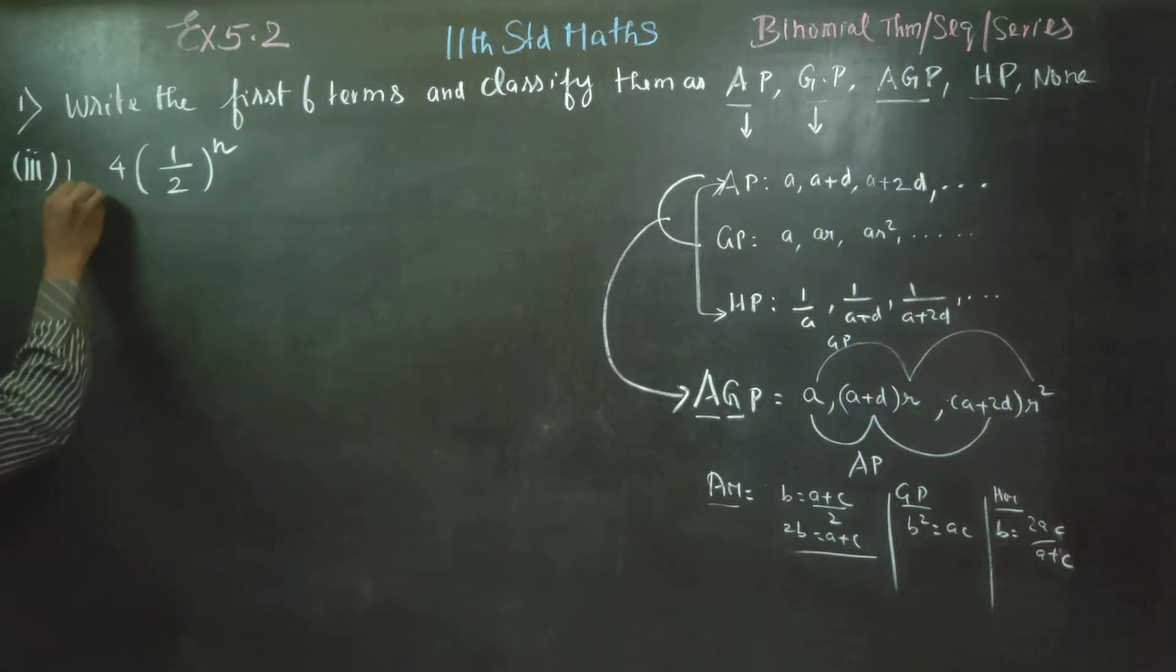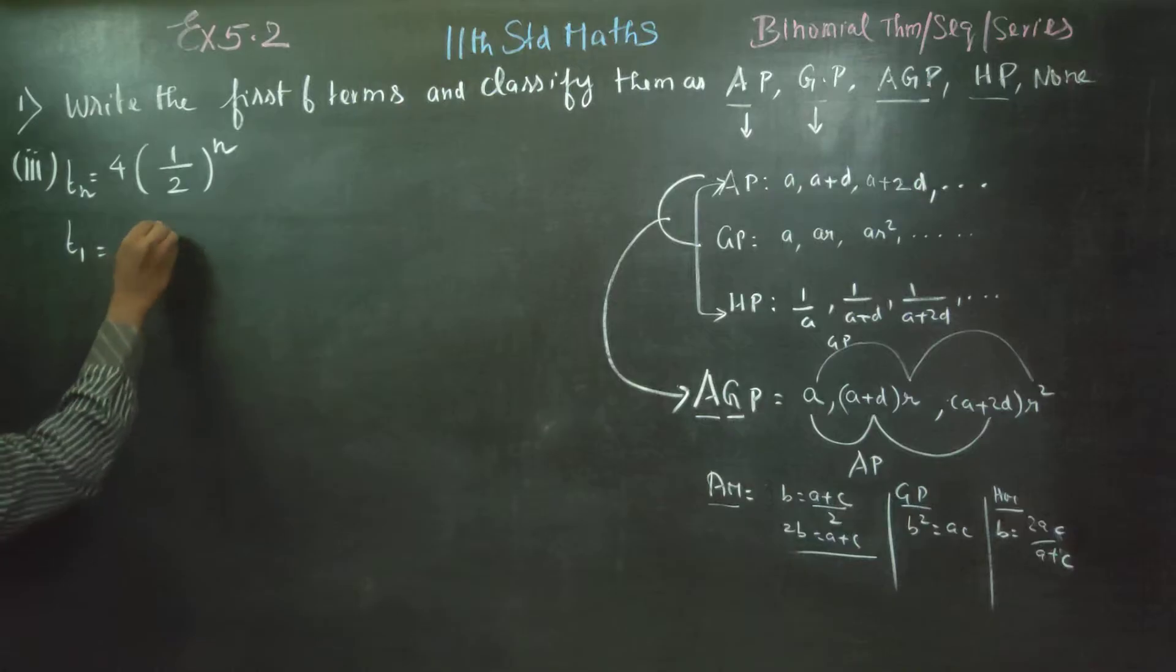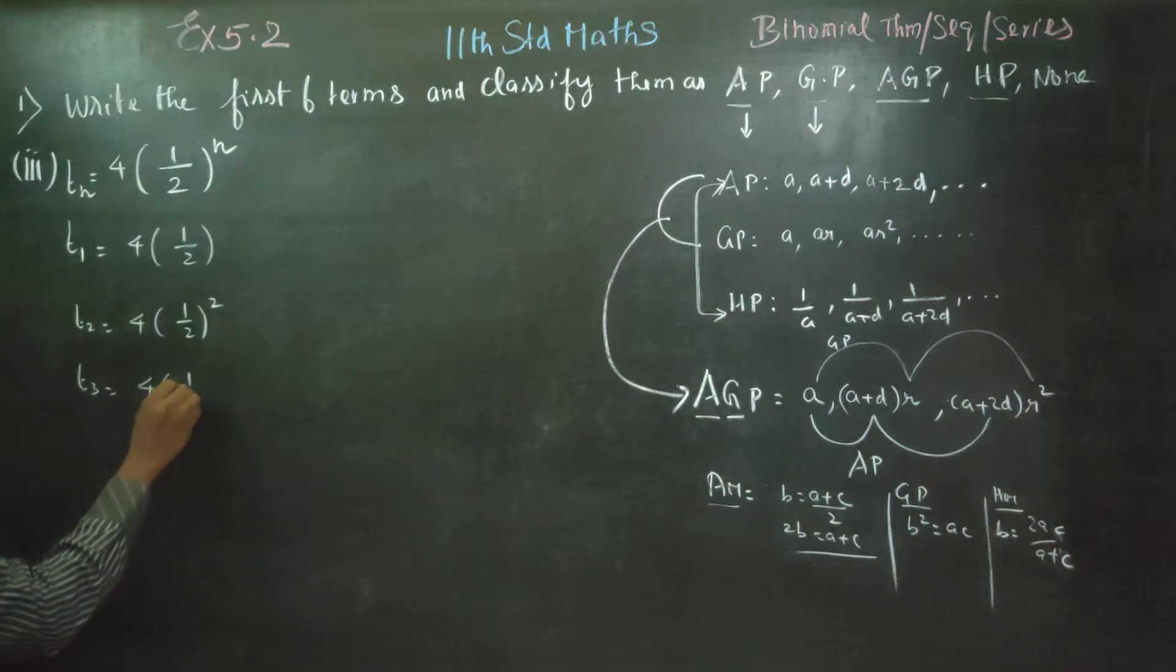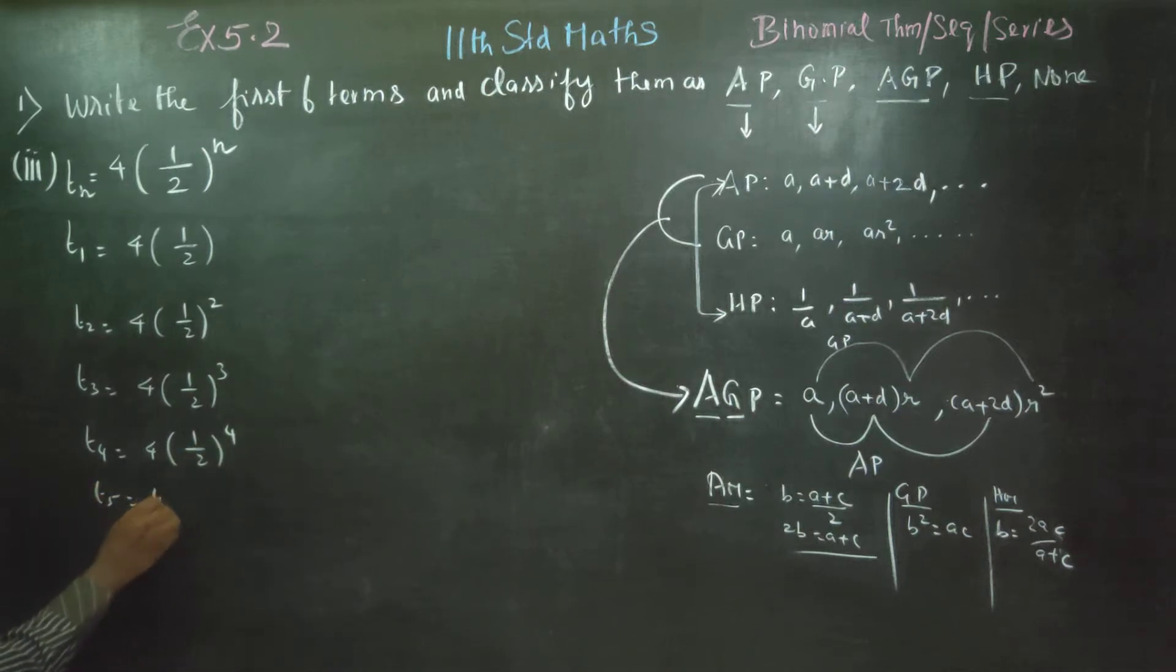Name this as general term Tn. You go for T1: 4 into 1 by 2 whole power 1. T2: 4 into 1 by 2 whole square. T3: 4 into 1 by 2 whole cube. T4: 4 into 1 by 2 whole power 4. T5: 4 into 1 by 2 whole power 5. T6: 4 into 1 by 2 whole power 6.